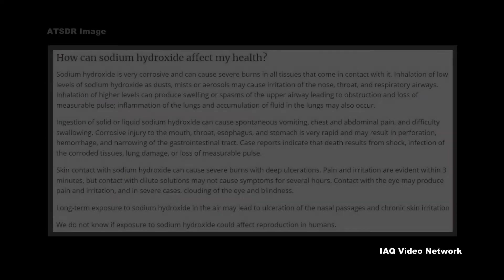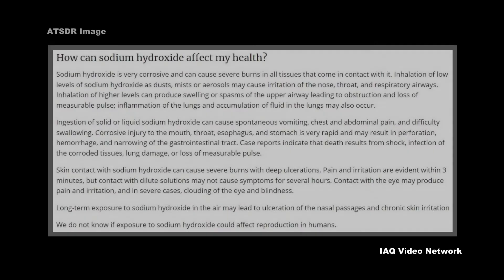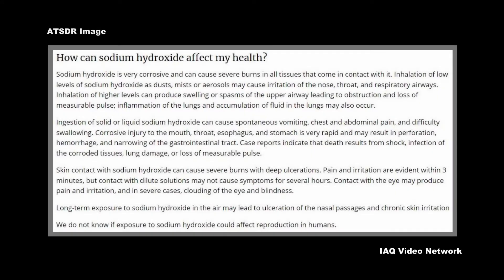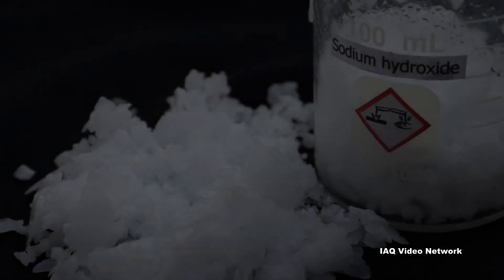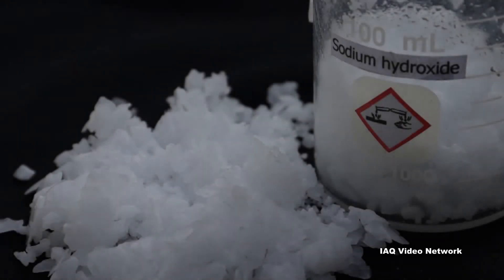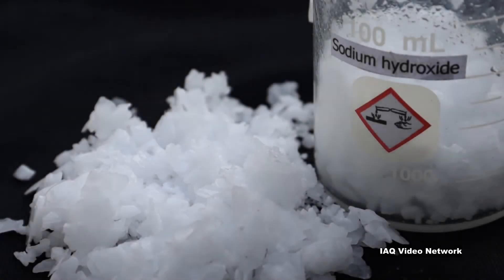The Agency for Toxic Substances and Disease Registry lists a number of ways people can be harmed by exposure. These include severe burns to tissue from contact and spontaneous vomiting, chest and abdominal pain, and difficulty swallowing from ingestion.